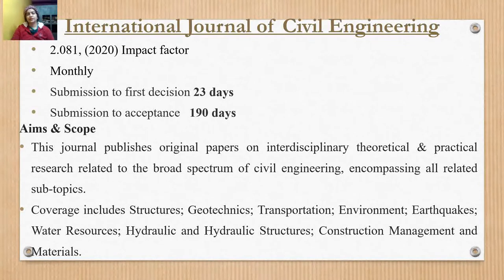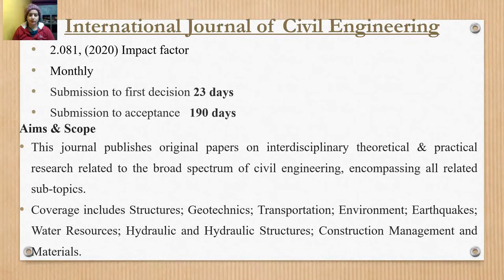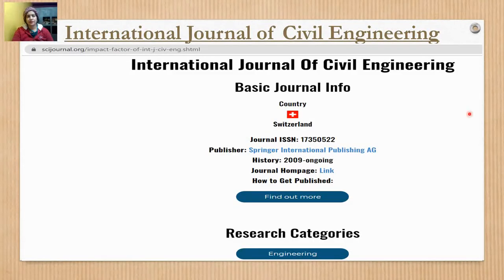The next journal we are discussing is the International Journal of Civil Engineering. Its impact factor is 2.081 in 2022, and it is a monthly journal. The first decision is given in 23 days, which is a very fast response. Acceptance takes around 190 days. The aim and coverage area includes interdisciplinary, theoretical, and practical research in engineering science and many topics. From the SCIJournal.org screenshot, you can see it has been ongoing from 2009. You can visit the journal homepage by clicking on the website link.